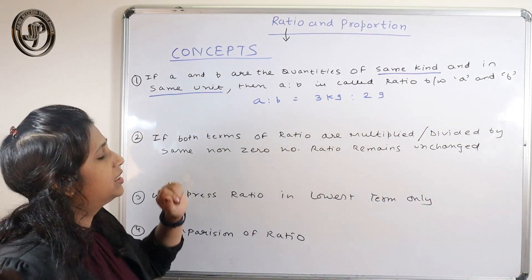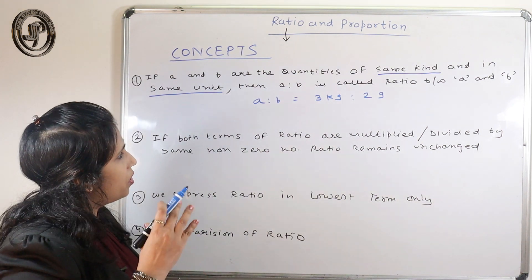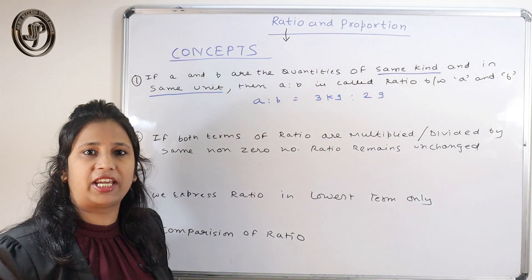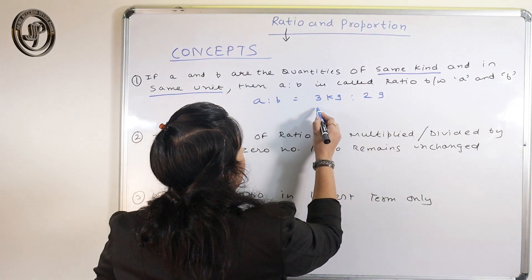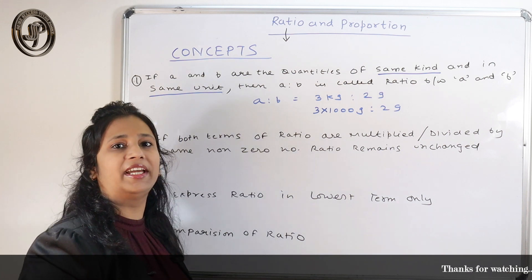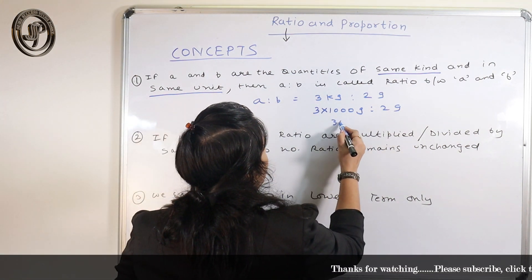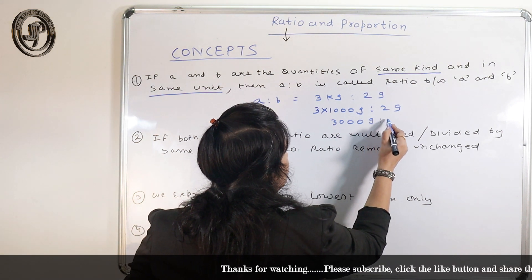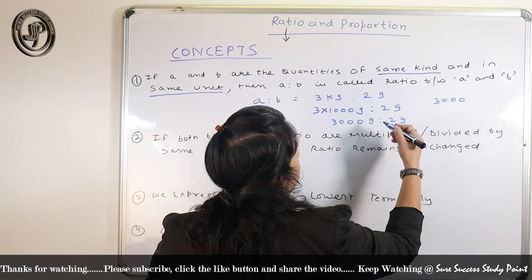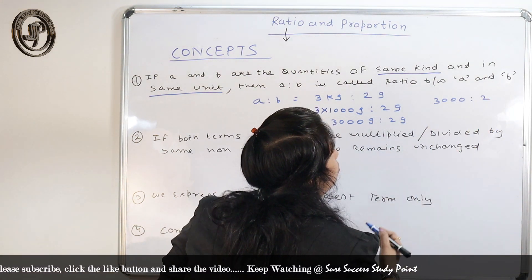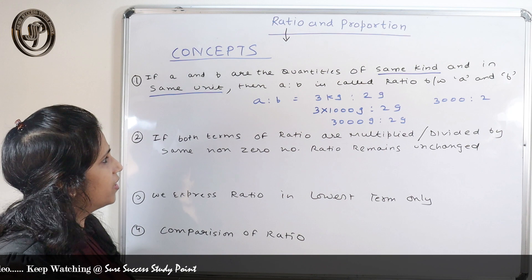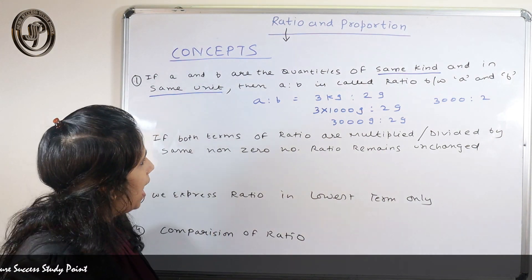They are of the same kind but not the same unit. So if we need to find the ratio, we have to convert them into the same unit. Since 1 kg equals 1000 grams, we convert to get 3000 grams is to 2 grams. Writing 3 is to 2 as the ratio for that quantity would be incorrect.